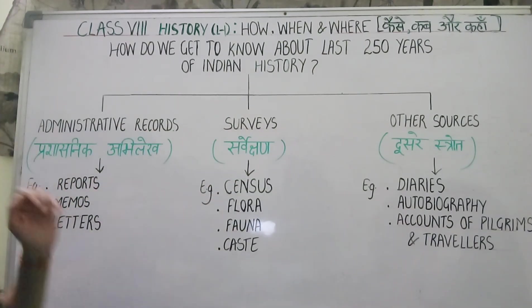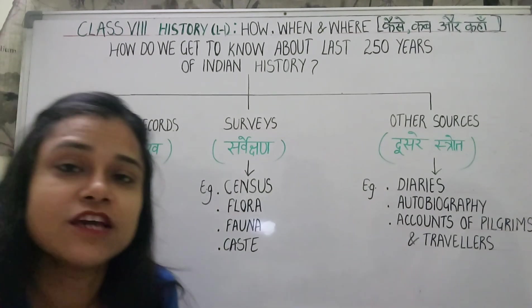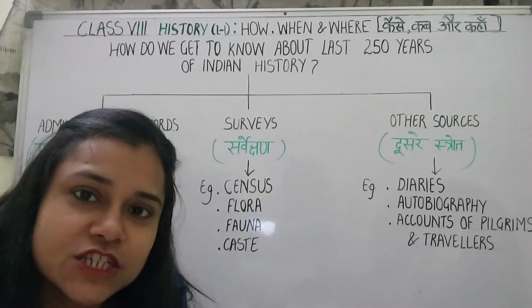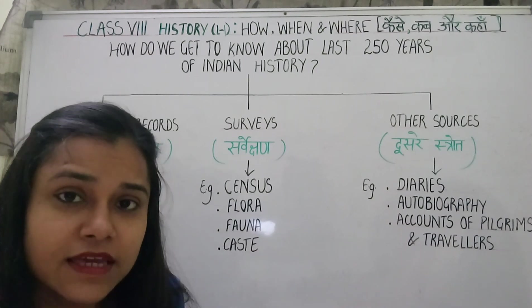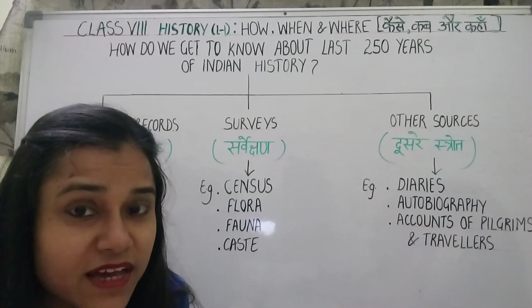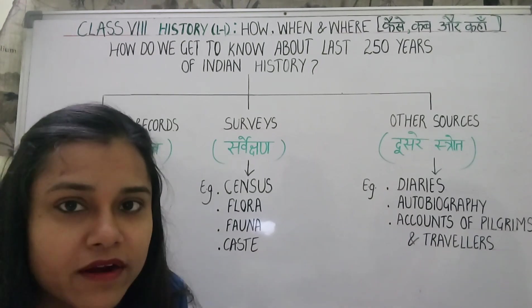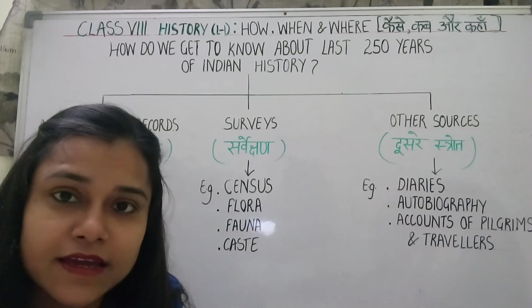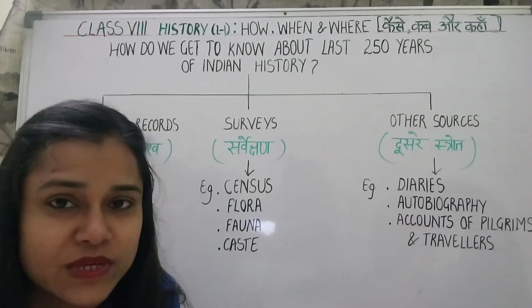So first, let's talk about administrative records or official records. When the British came to India, they thought that whatever they do, they should record and write it down and keep it, so that they could refer to it easily.